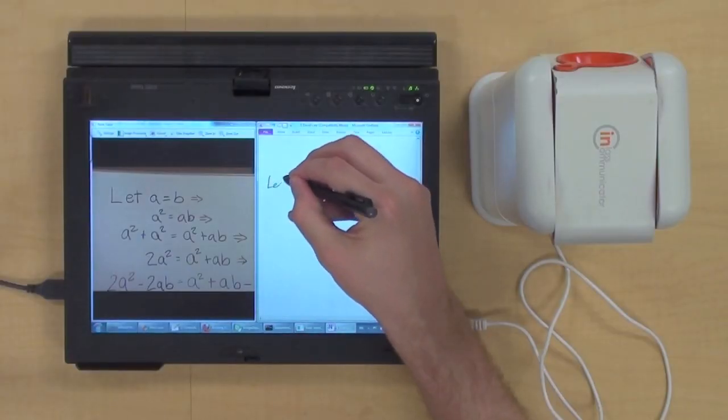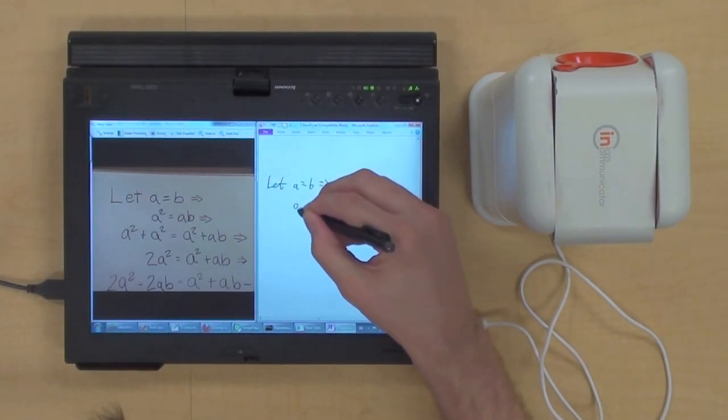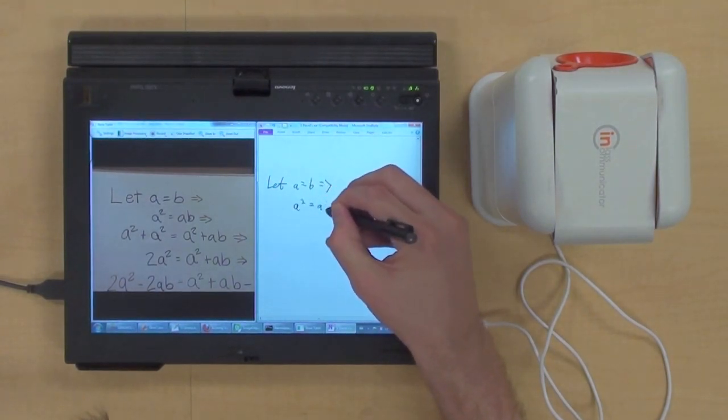The note taker works by providing a low vision student with a view of their notes and a view of the board at the same time, using a split screen interface on a tablet.